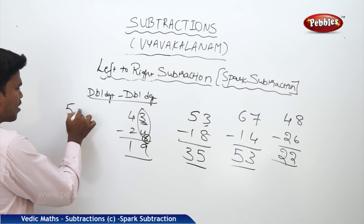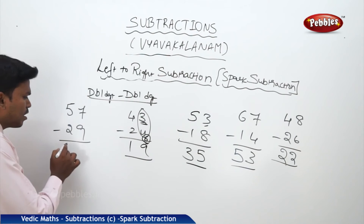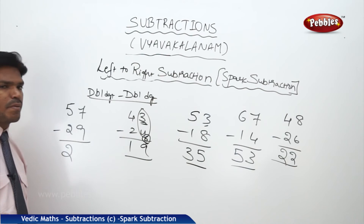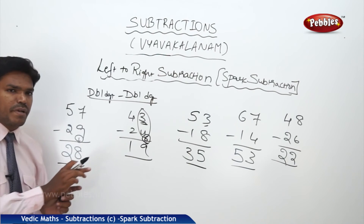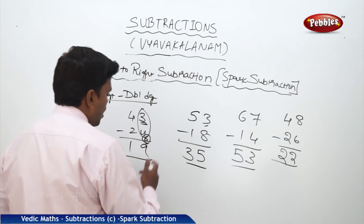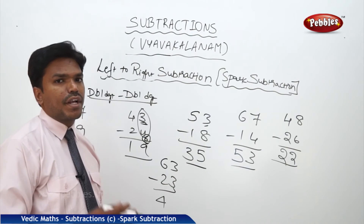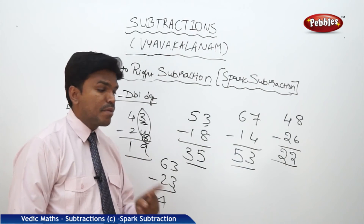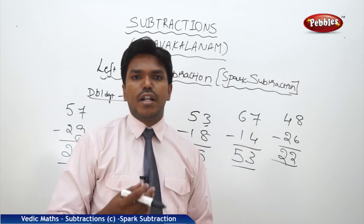One more example: 57 minus 29. What is 5 minus 2? That is 3. But next numbers are mismatch, so 3 becomes 2. Since mismatch, bring 7 and add to 9's complement, which is 1. So 7 plus 1 equals 8. Answer is 28. And 63 minus 23: 6 minus 2 equals 4, and the next numbers are the same — match. So 3 minus 3 equals 0. Answer is 40. That's how double digit minus double digit works.